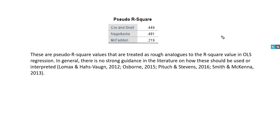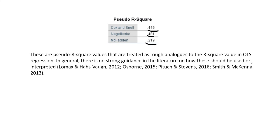Next we have the pseudo-R-square values: Cox and Snell, Nagelkerke, and McFadden's. In general, there's not any real strong guidance in the literature on how these should be used or interpreted, so I would interpret these with caution.